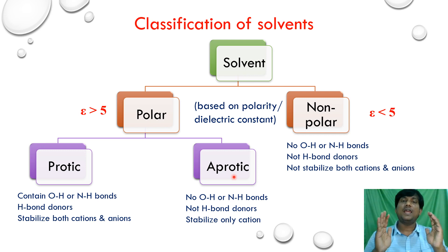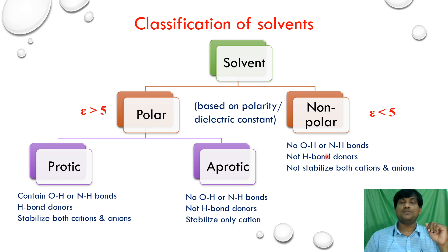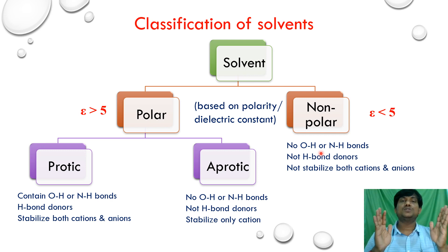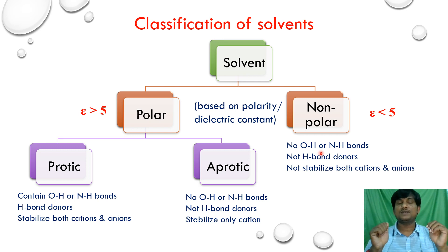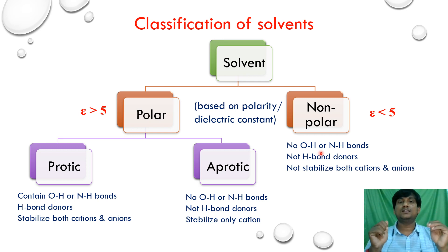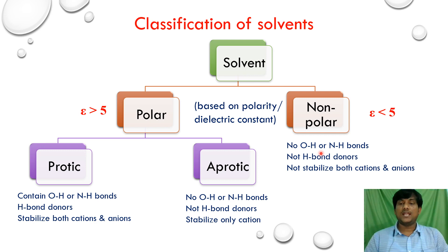In the case of non-polar solvents, these solvents do not have NH or OH bonds, cannot form hydrogen bonds, and cannot solvate cations or anions. This means they cannot stabilize either cations or anions.